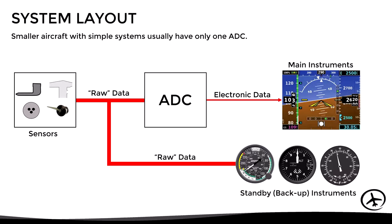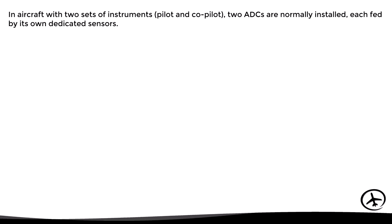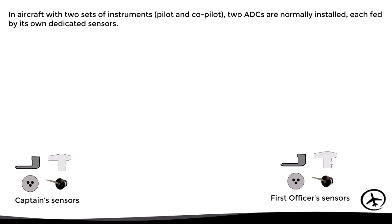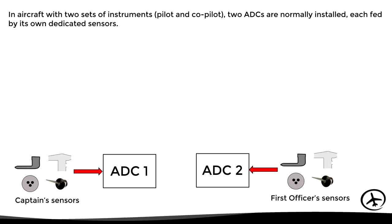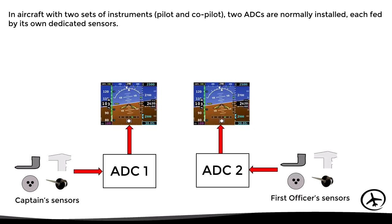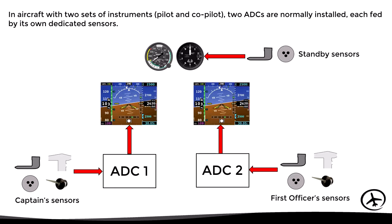In aircraft with two sets of instruments, two ADCs are normally installed, each fed by its own dedicated sensors. This means there are two sets of sensors: one for the captain's instruments and another for the first officer's instruments. Each group of sensors feeds one ADC, and each ADC feeds the corresponding group of instruments. Either the captain's or first officer's sensors will feed the standby instruments, although on some modern aircraft a third set of sensors is installed for the standby instruments, providing greater redundancy.